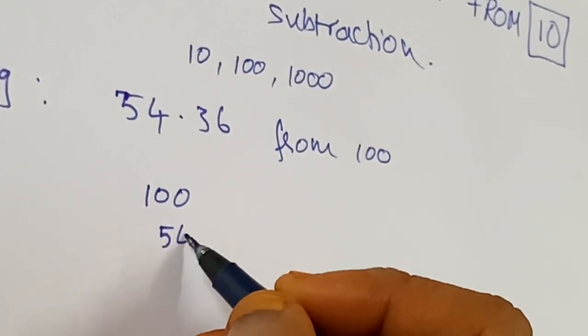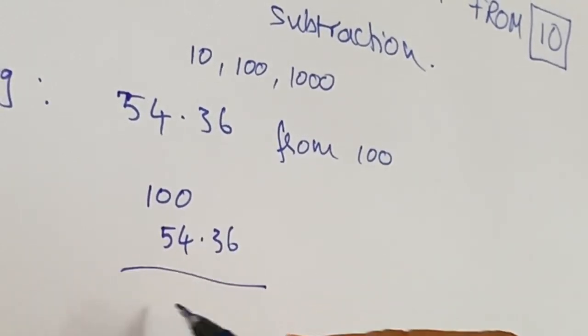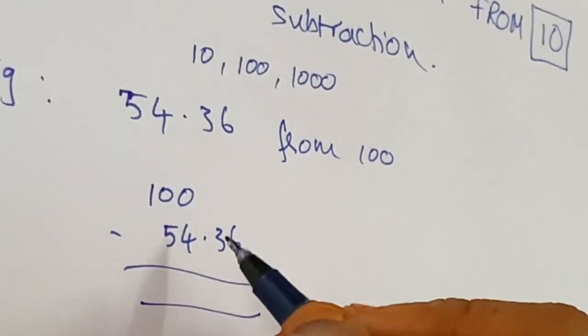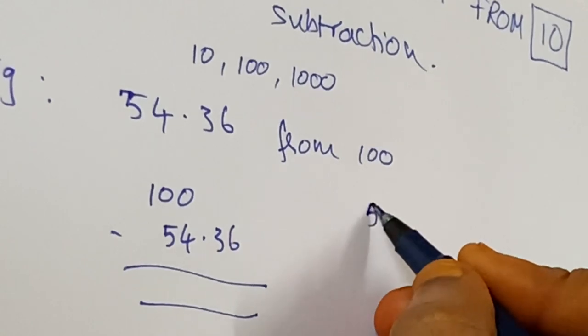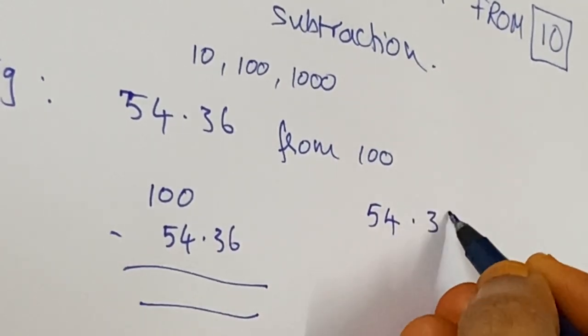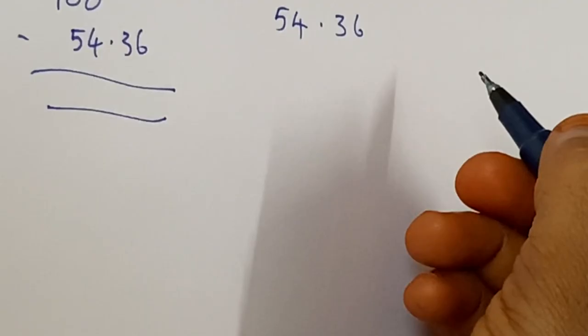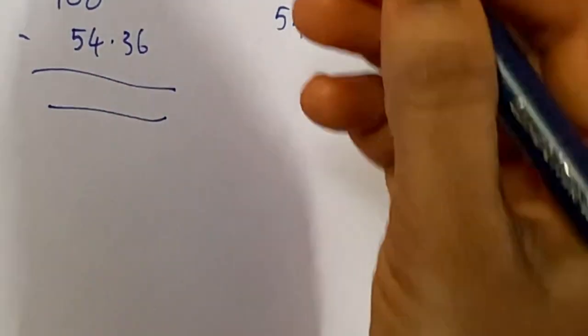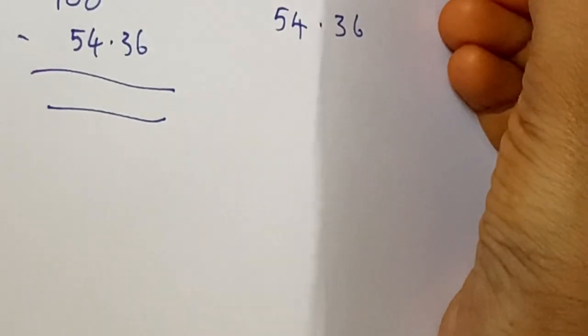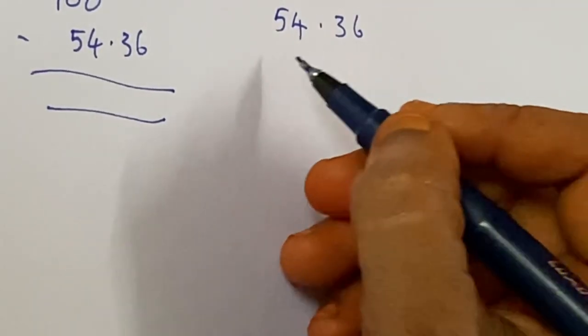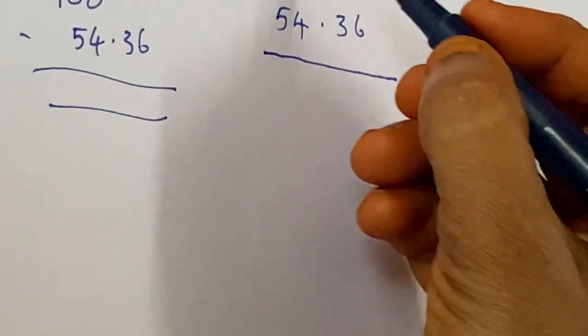In this case we subtract very easily. We have to subtract every number from 9 and the last one from 10. So this is the last one, which is subtracted from 10. So you can write it here.